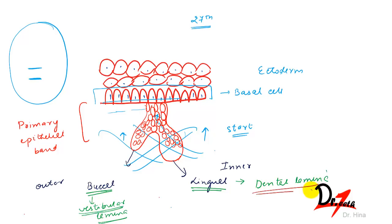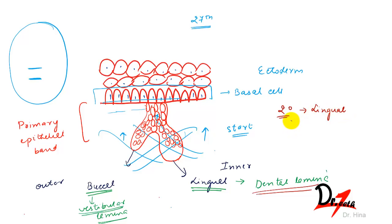The dental lamina forms the ectodermal portion of the deciduous teeth. The permanent successors will arise from the lingual extension of the dental lamina, and the permanent molars will arise from its distal extension.